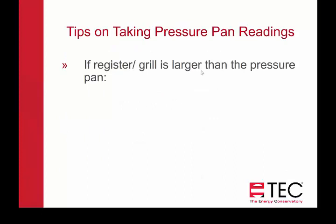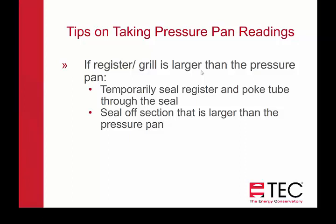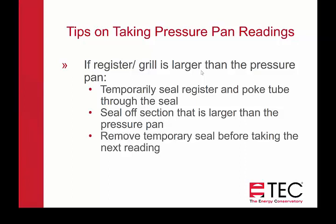If you run across a register grill that's larger than the pressure pan — for example, if you're using the smaller 12 by 14 pressure pan and you're measuring a central return grill — there are a couple of ways to handle that. You can temporarily seal that whole register and poke a tube through the seal, or you can seal off the section of it that's larger than the pressure pan and then use your pressure pan on it. Make sure to temporarily remove that seal before going on and taking your next reading, because that will affect your other readings.